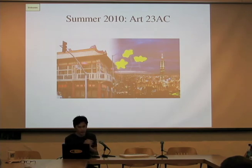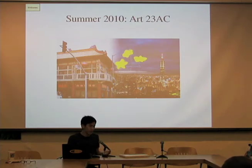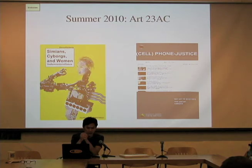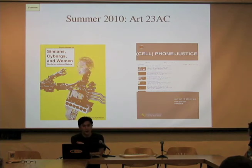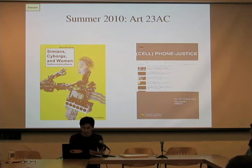Here's one of my works from Art 23 AC. This assignment was called 'Who Are You?', where we interviewed a classmate and created a piece based on the identity we constructed from what they told us. We also did a reimagining of the cover of Donna Haraway's book, Simians, Cyborgs and Women, based on our readings. And the other thing is Cell Phone Justice — a poster for a conference that Greg hosted on 10-10-10. It was about how cell phones change the way that justice is carried out in society, and there were some really interesting talks there.